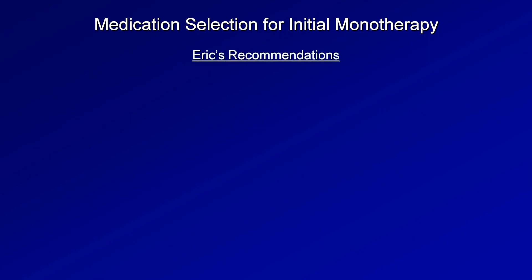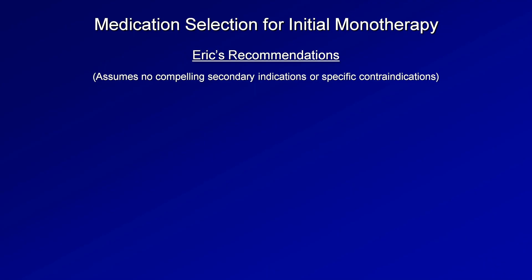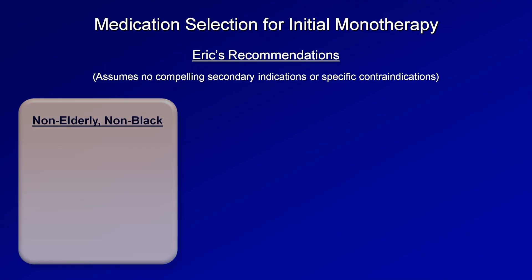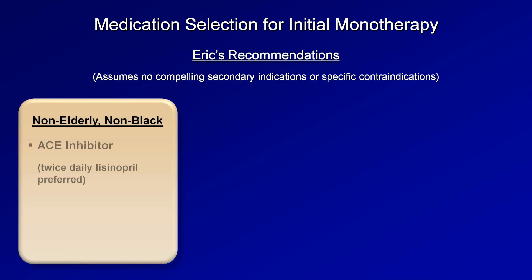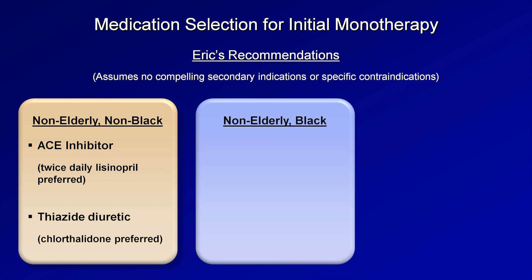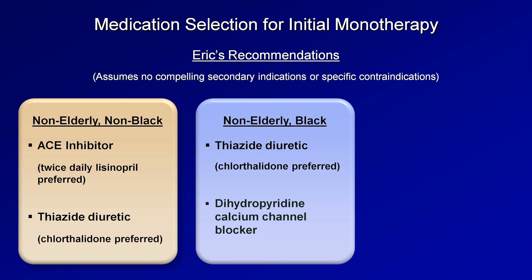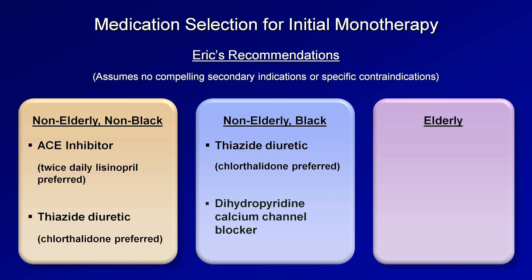For my specific recommendations for initial monotherapy, assuming no compelling secondary indications or contraindications: for non-elderly, non-black patients, I recommend starting either an ACE inhibitor — I personally prefer twice-daily lisinopril — or a thiazide diuretic, in which case chlorthalidone might be preferred over the more common hydrochlorothiazide. For non-elderly black patients, I recommend either chlorthalidone or a dihydropyridine calcium channel blocker, such as amlodipine. The difference stems from data suggesting black patients tend to be less responsive to inhibition of the renin-angiotensin-aldosterone system. In elderly patients, due to increased risk of side effects, I recommend avoiding meds that could lead to renal dysfunction or electrolyte abnormalities — thus dihydropyridine calcium channel blockers are the best option.